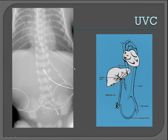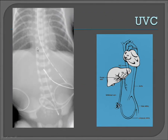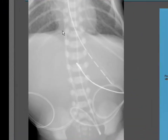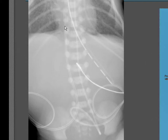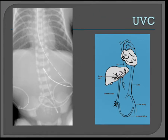Now to talk about UVCs. UVCs take a more anterior course in the body, and you can see it coming in through the umbilical vein. It comes up to the portal sinus, or the junction of the left and right portal veins, then goes into the ductus venosus, through a hepatic vein, and then into the IVC. It should terminate around the level of the diaphragm at the junction of the IVC and the right atrium. This one is a little bit too high — it terminates in the right atrium. Here we can see it coming in through the umbilical vein, up towards the liver, towards the portal sinus, into the ductus venosus, into a hepatic vein, up into the IVC, and then into the right atrium.